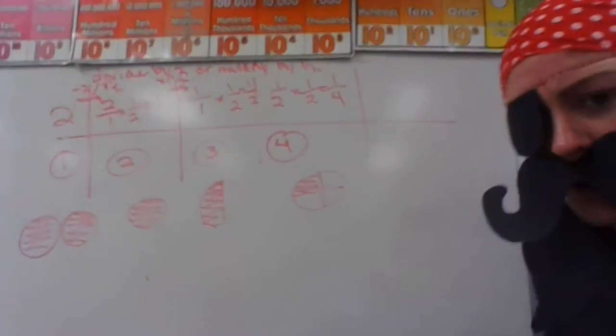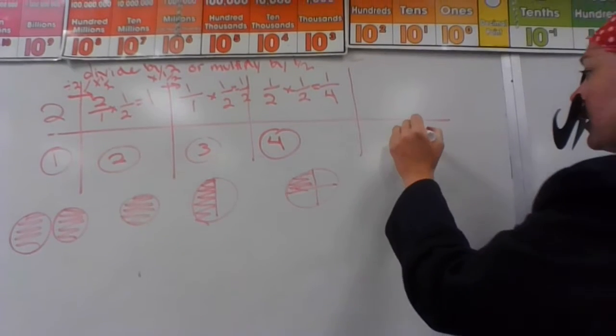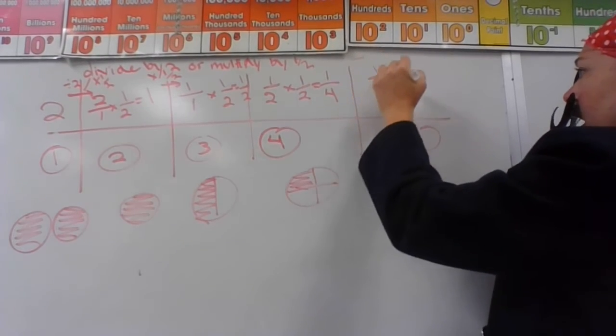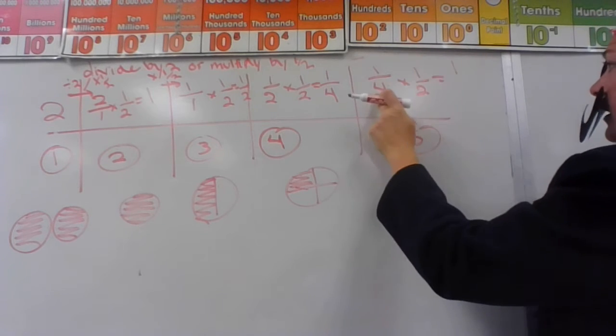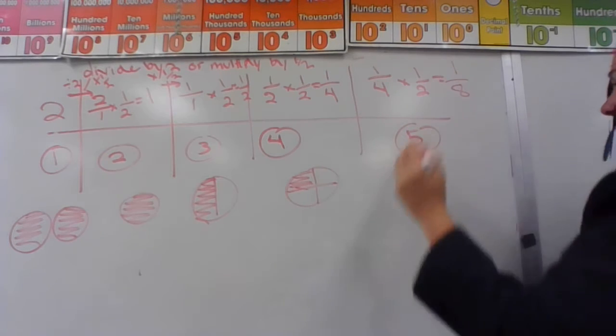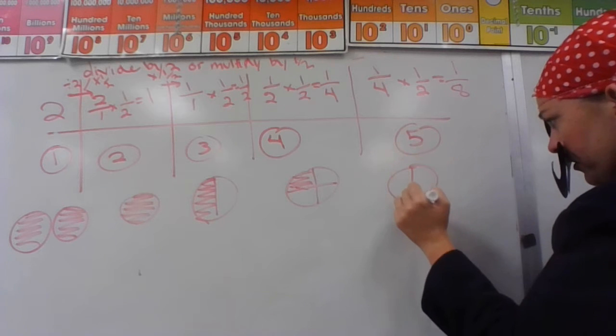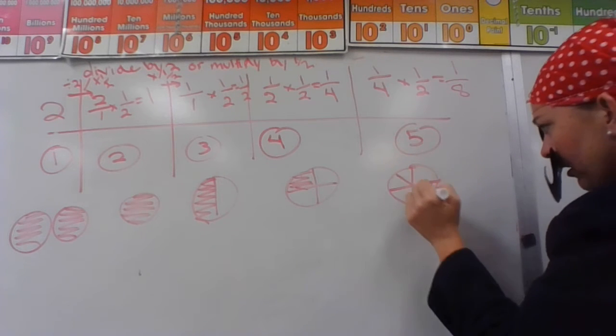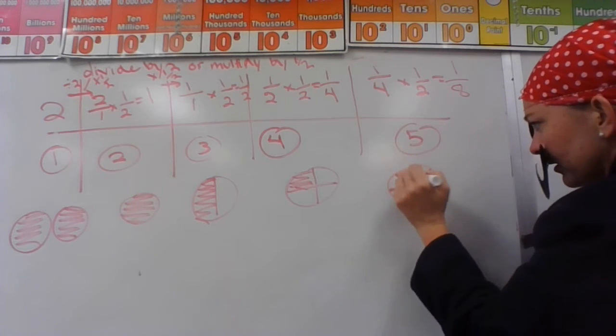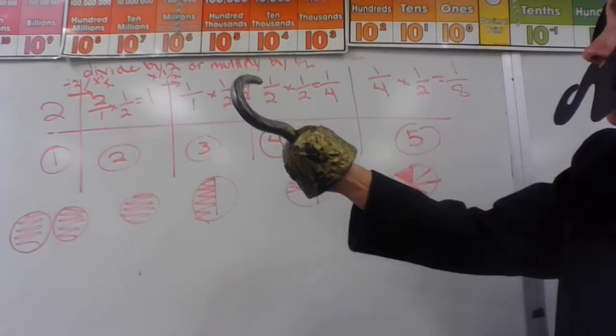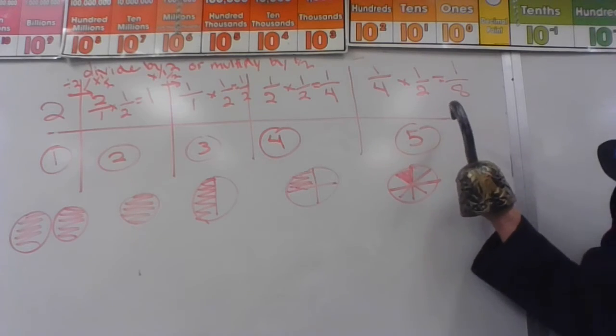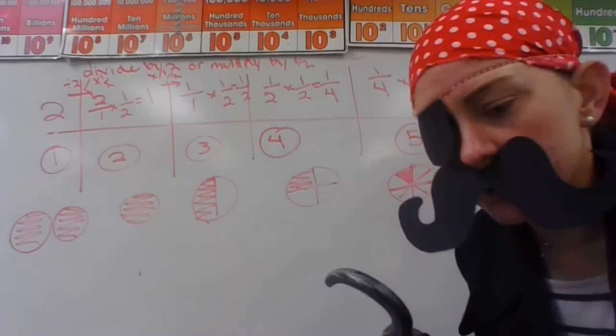We go to our fifth term. One-fourth times one-half. One times one is one, four times two is eight. In the picture now, I'll draw fourths first, and then I'll cut those in half, and I'm just shading in one little piece there. So we've got two, one, one-half, one-fourth, one-eighth. And we can do it another time.